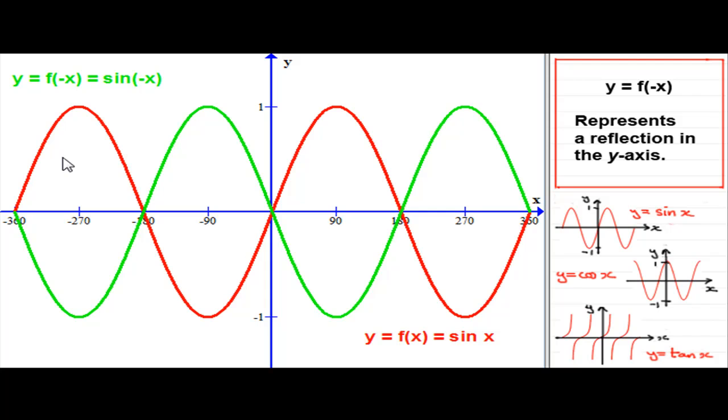But we have reflected it in the y-axis. Take this point, for instance, on y equals sin x at minus 271. You can see that it's gone over to here at 271. Take a point like this at 180, 0. It's actually gone to minus 180, 0. And you can look at that for all the other points and hopefully you can see that the red graph has been reflected in the y-axis.